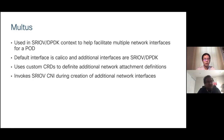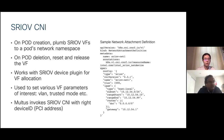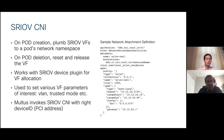The SRIOV CNI is the component that plumbs the SRIOV VFs to a pod's network namespace and clears them on pod deletion. It works with the SRIOV device plugin for VF allocation and is used to set various VF parameters like VLAN and trusted mode. Multus invokes the SRIOV CNI with the right device ID. Once the SRIOV device plugin allocates a specific virtual function, Multus passes that PCI address information to the SRIOV CNI plugin to do the plumbing. A sample network attachment definition includes information like VLAN, IP address range, and the type field telling Multus which CNI to call — in this case, SRIOV CNI.